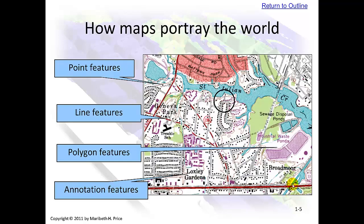This slide shows four different things: point features, line features — this is a road — a polygon feature — this is a waste pond — and annotation features, which are labels.